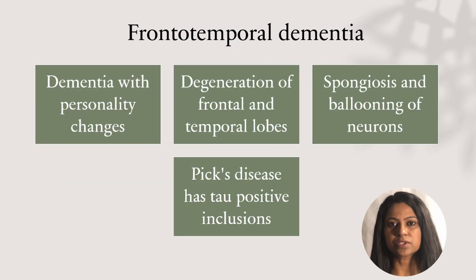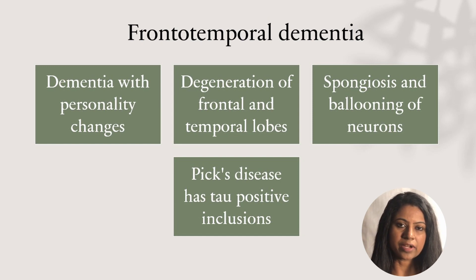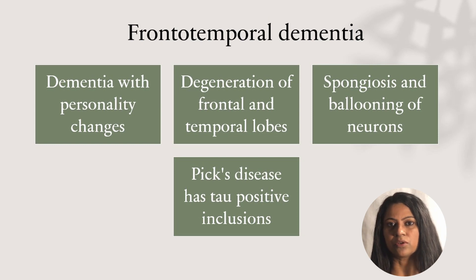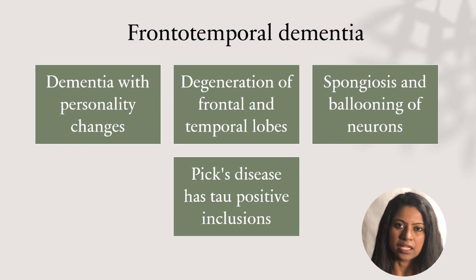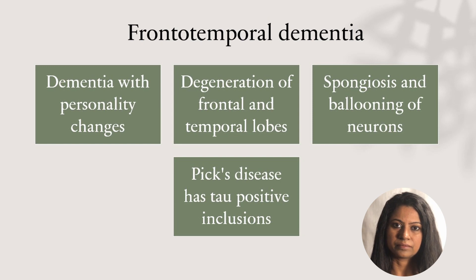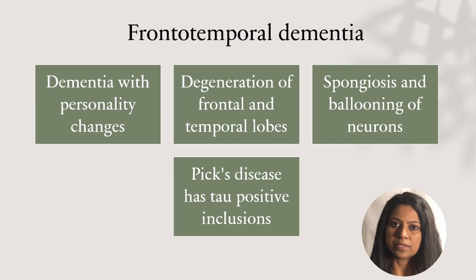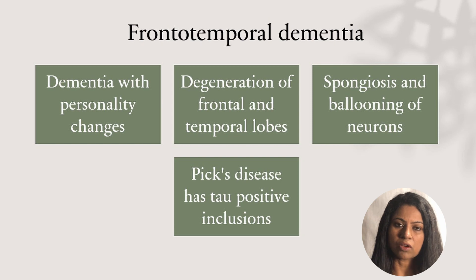Frontotemporal dementia is the most common cause of dementia in people under the age of 60 years. It is characterized by progressive degeneration of the frontal and temporal lobes of the brain. It presents with dementia and personality changes such as loss of emotional control and disinhibition. On histopathological examination, there is characteristic vacuolization of the superficial cortex, also known as spongiosis. Other changes include loss of neurons and gliosis.